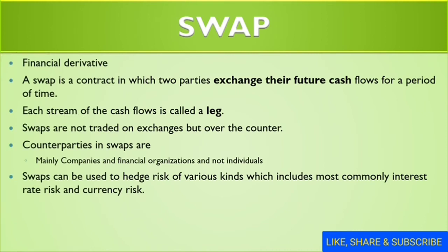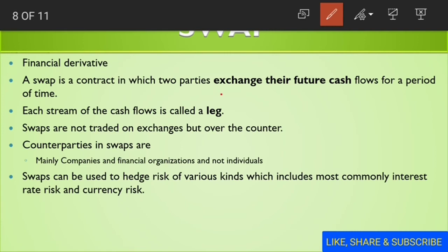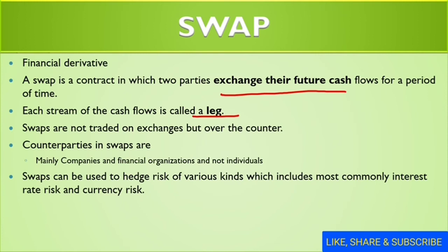Now we will study the third point — swap. Swaps are also financial derivatives. In a swap, there is a contract between two parties to exchange their cash flows for a period of time. Each stream of cash flow is called a leg. Swaps are not traded on the stock exchange, just like forwards, but they are traded over the counter. The counterparties are mainly companies and financial organizations — individuals do not participate in swaps. Swaps are used to hedge risk of different kinds, including interest rate risk or currency risk.